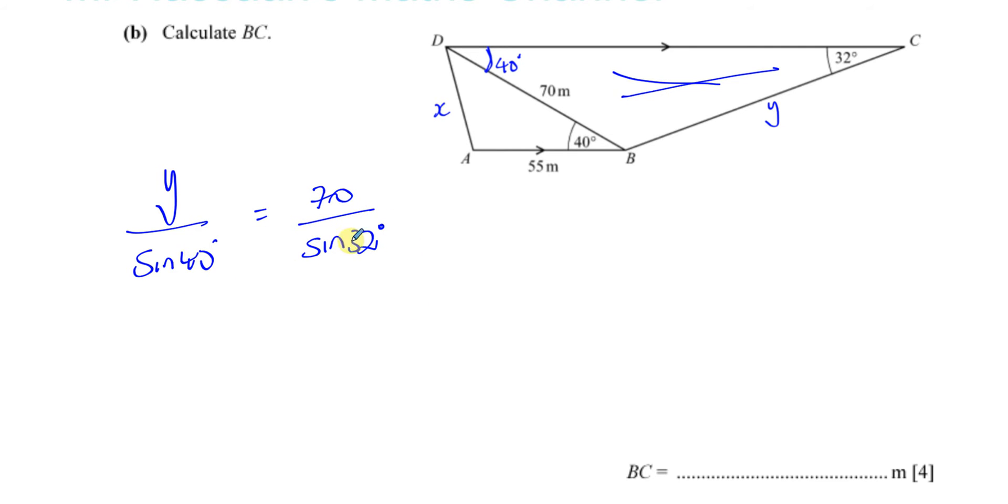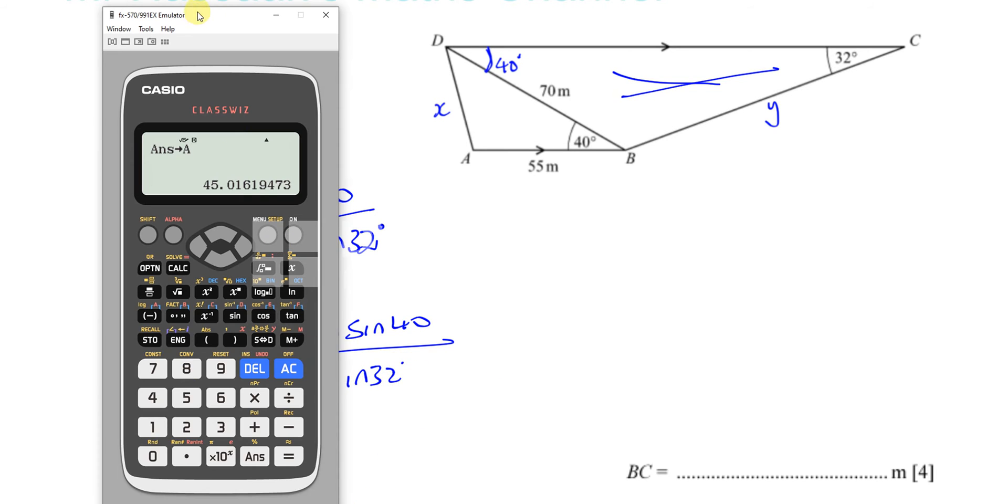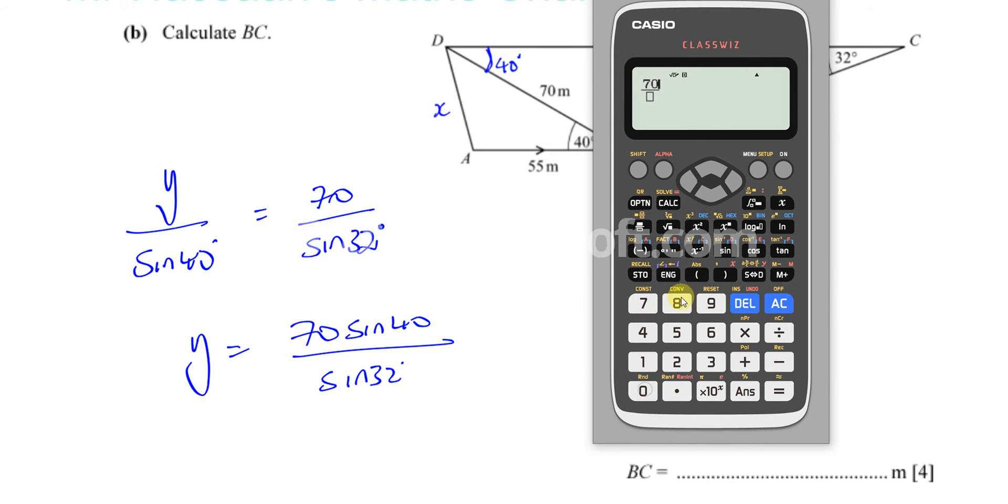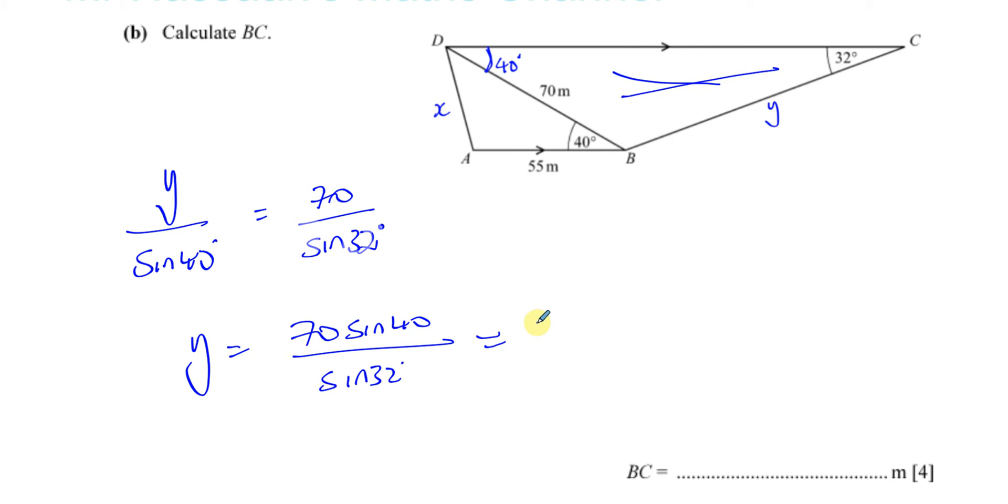The sine rule states that side over the sine of the angle opposite that side is going to give you the same ratio as another side in the triangle divided by the sine of the angle opposite that side. So Y divided by sine 40 will give me the same ratio as 70 over sine 32. I like to keep the unknown on top. So you've got 70 times sine 40 over the sine of 32. And that will give us our answer for the next part. 70 sine 40 divided by the sine of 32. That will give us the length Y, 84.909. And I'm going to also store this, but this time as B.